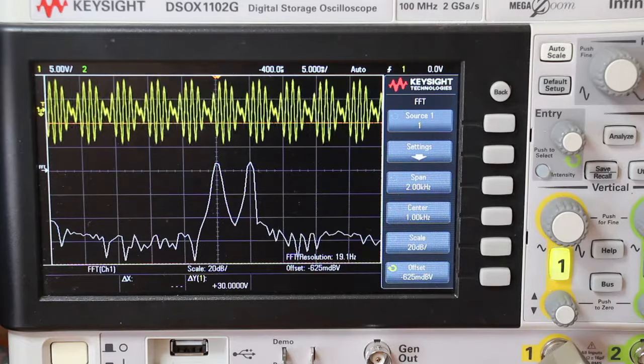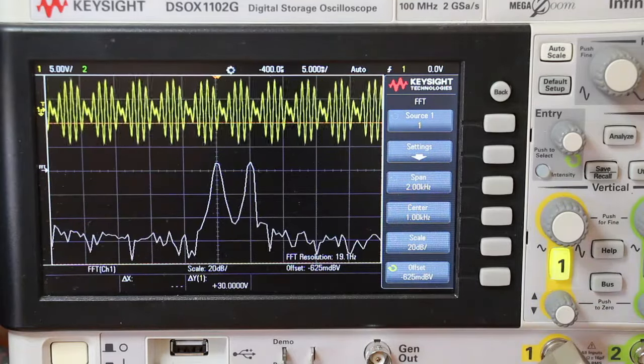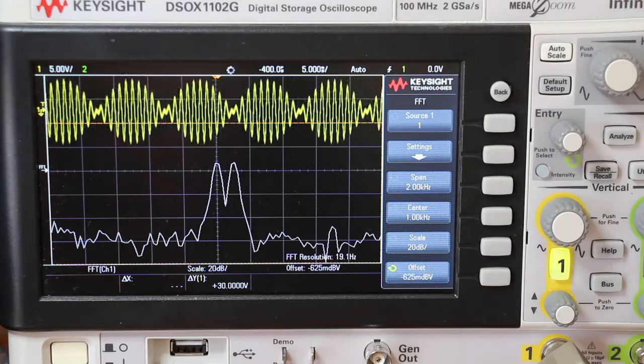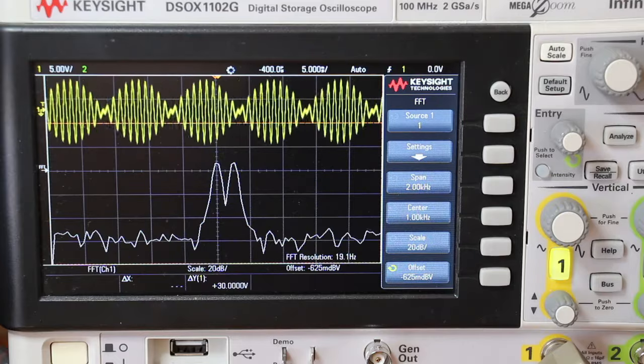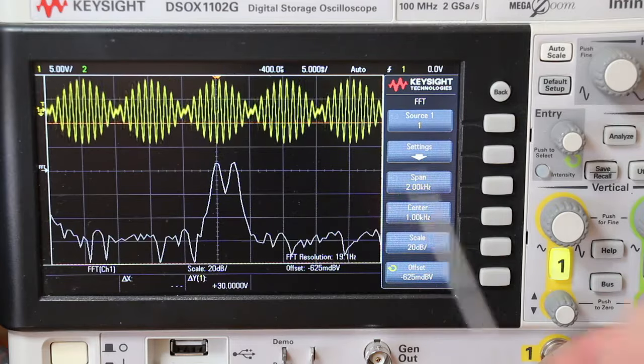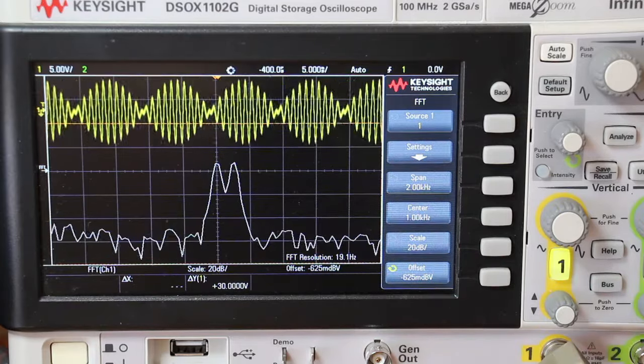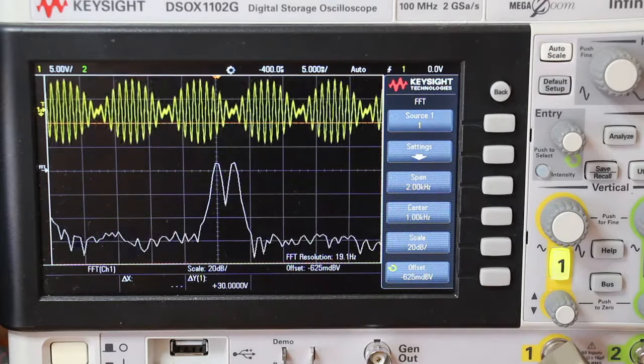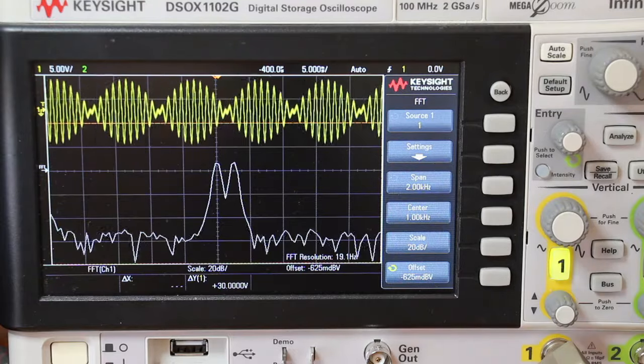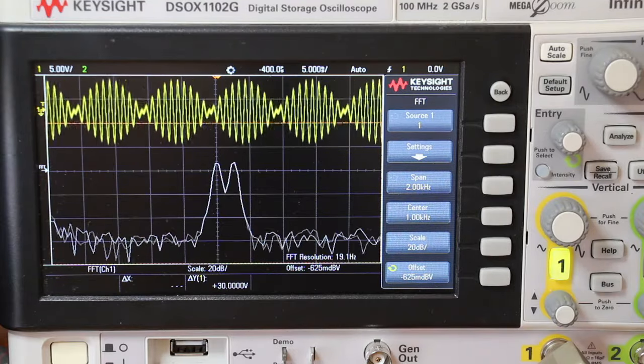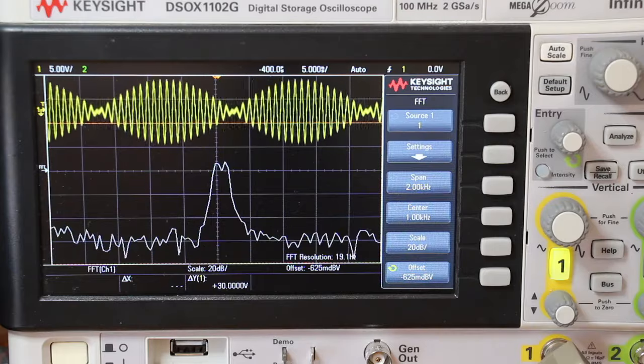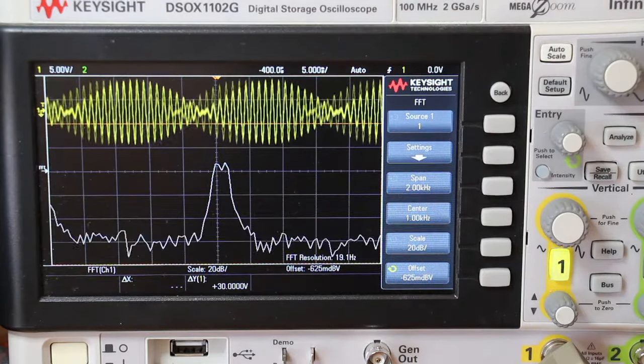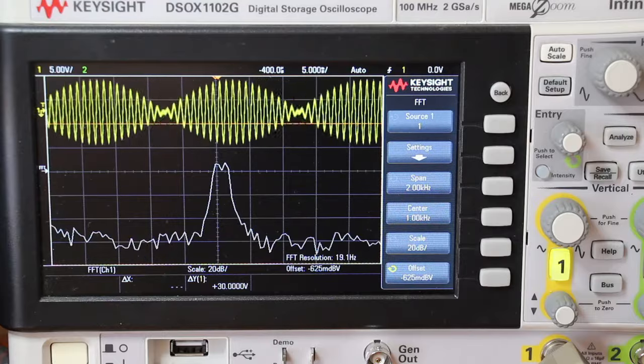Now I will reduce the difference between tones to 100 Hz, so the second tone is now 1.1 kHz. We can see that the scope starts to struggle to show the two tones. Reducing 50 Hz more, you can see that we just can't measure the tones anymore.